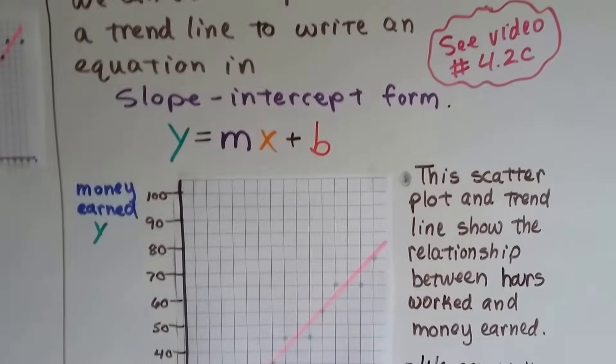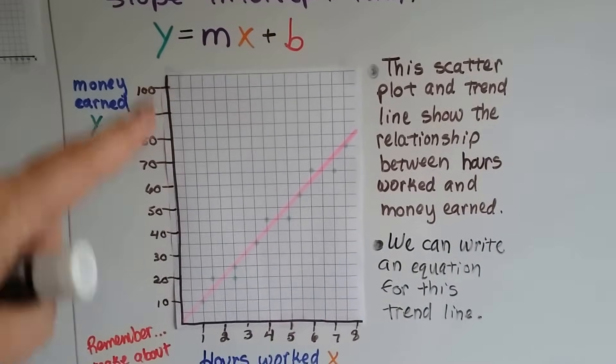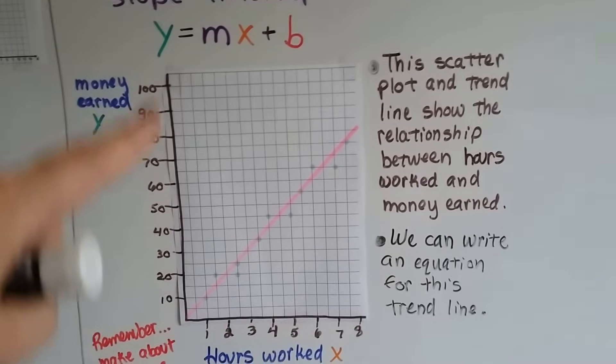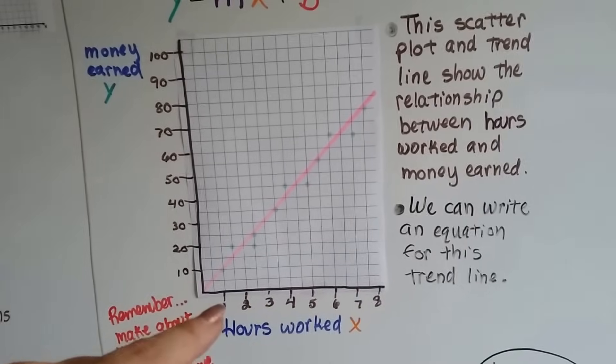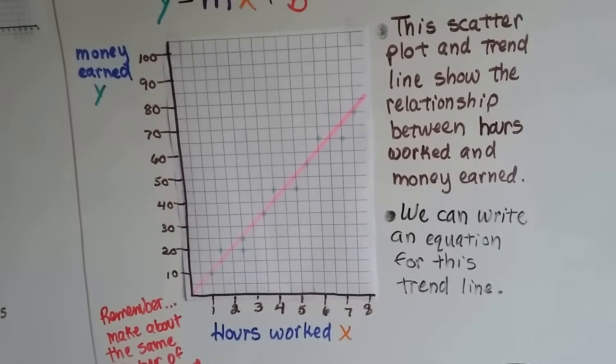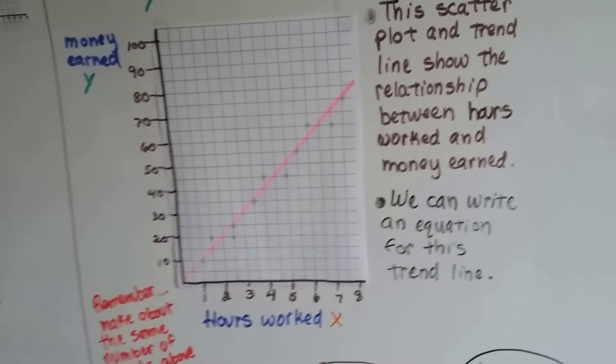So I'm going to write an equation in slope-intercept form. So here's our scatter plot. This over here is money earned. This is our y-axis. And here's the hours worked. That's our x-axis. And this scatter plot and trend line show the relationship between hours worked and money earned.